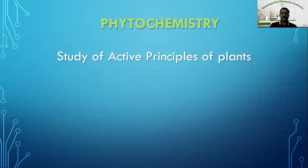Let us see what exactly is phytochemistry. Phytochemistry is the study of active principles of the plant. The active principles are alkaloids, glycosides, tannins, saponins, resins, and oils. So the study of these constituents — their structure, properties, solubility, and some examples — that is what we are going to study in phytochemistry. These chemicals are also known as phytochemicals.